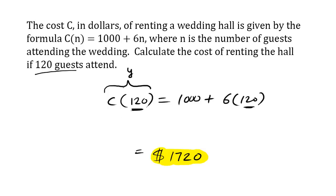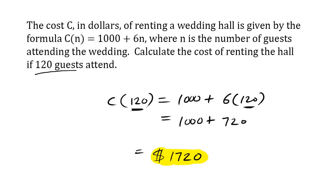So we're trying to solve for the cost, and we're trying to solve for C of N. We just work it out: C of 120 equals 1000 plus 6 times 120, which is 720. The total cost of renting the hall if 120 guests attend is $1,720.